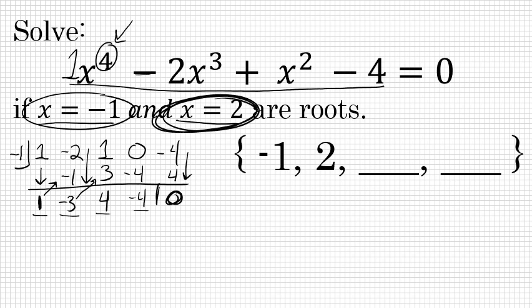So here you are also given a root of 2, and what I'm going to do is divide by 2 using these coefficients, the 1, negative 3, 4, and negative 4 from the previous step. And again, because this 2 is a solution, is a root to the original equation, this remainder must be 0.